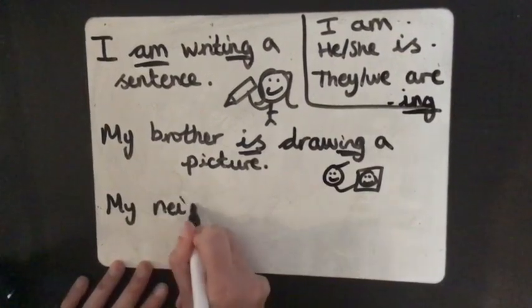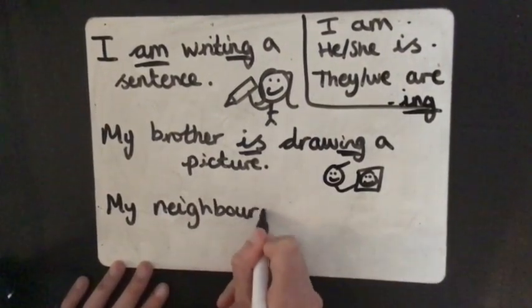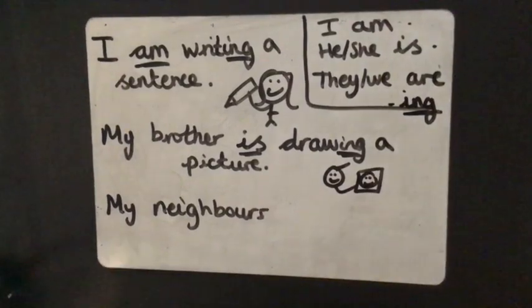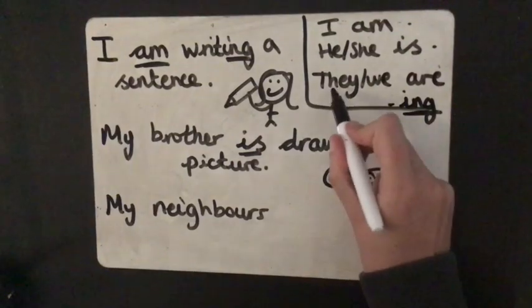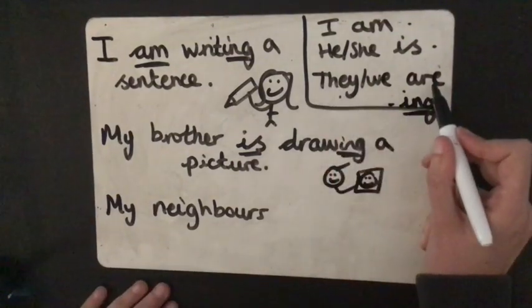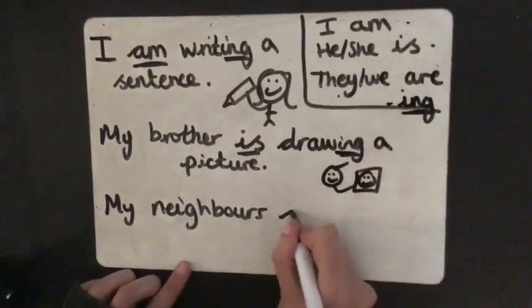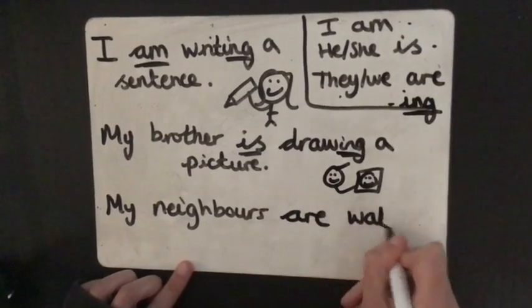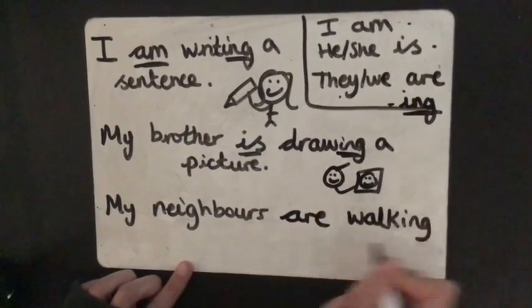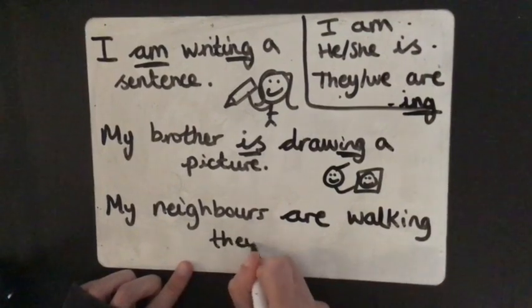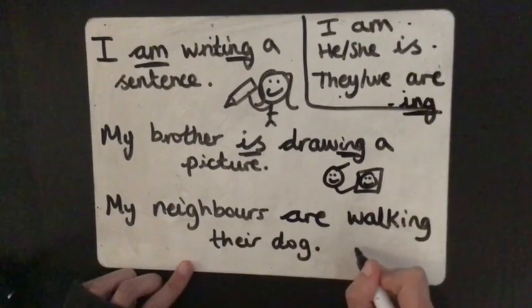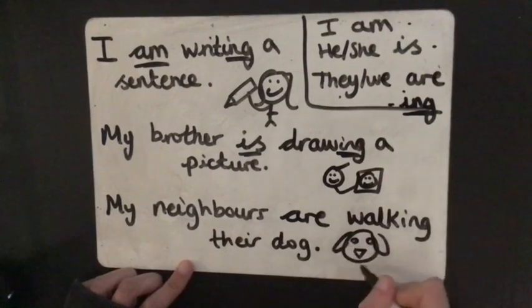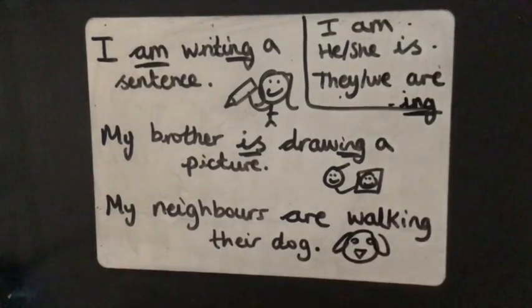My neighbours. Now my neighbours. There's more than one of them. So they're going to be a they aren't they? They. So if it's they, we're going to follow it with are. My neighbours are walking their dog. Full stop. And I'll draw a picture of their dog to go with that sentence. I like drawing pictures as well. And there we have it.